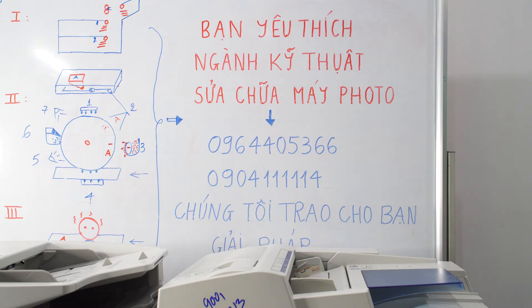Mỗi hãng lại có những mã báo lỗi, những mã báo hư hỏng khác nhau. Và cách giải quyết những vấn đề khi máy photo của các hãng báo lỗi cũng sẽ có cách tiếp cận và giải quyết khác nhau.